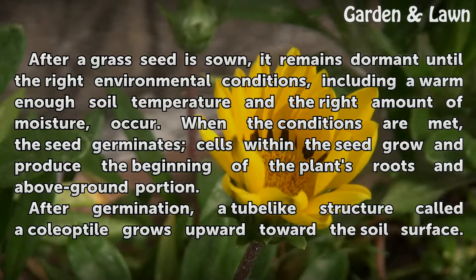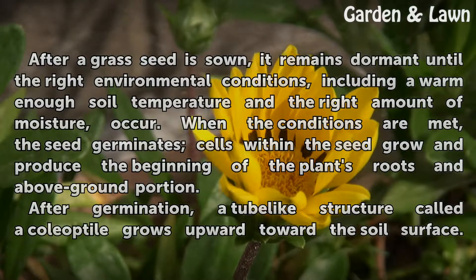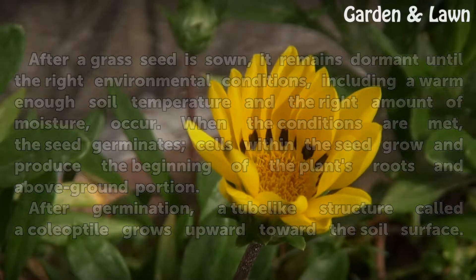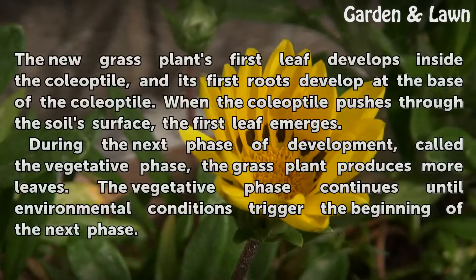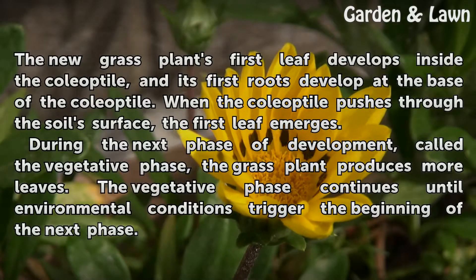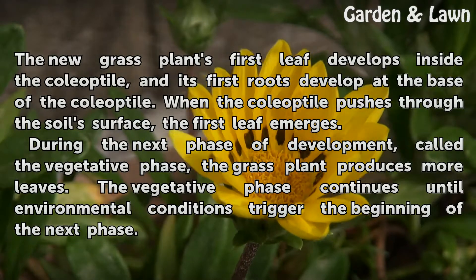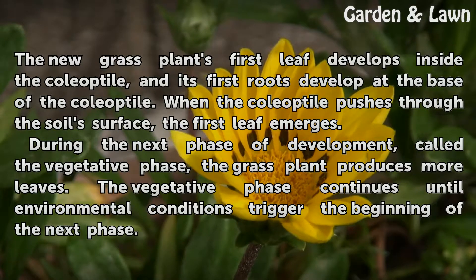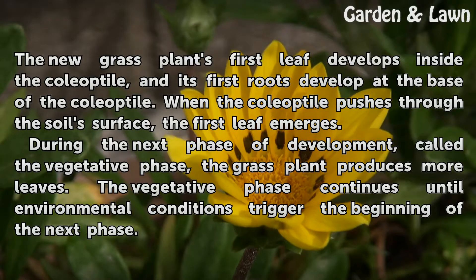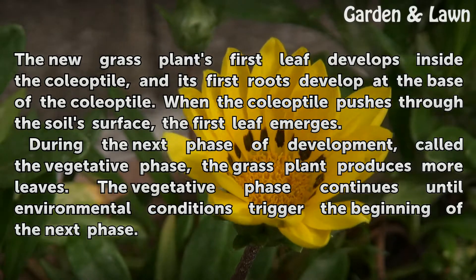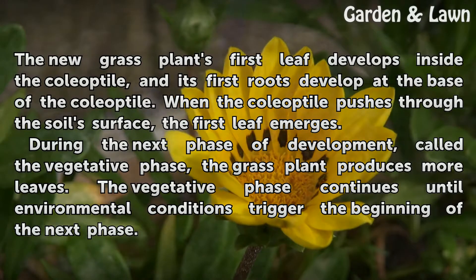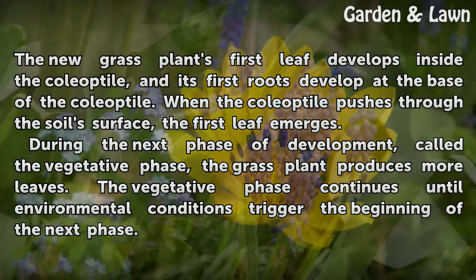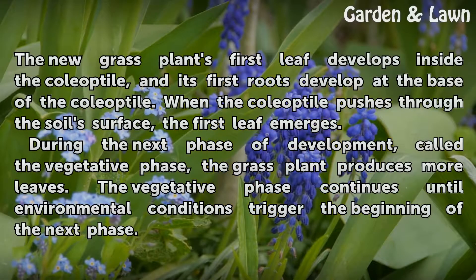After germination, a tube-like structure called a coleoptile grows upward toward the soil surface. The new grass plant's first leaf develops inside the coleoptile, and its first roots develop at the base of the coleoptile. When the coleoptile pushes through the soil's surface, the first leaf emerges.